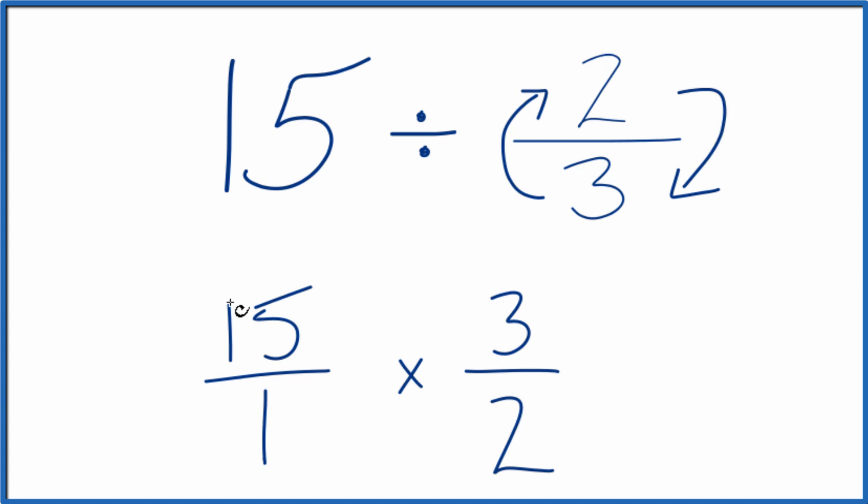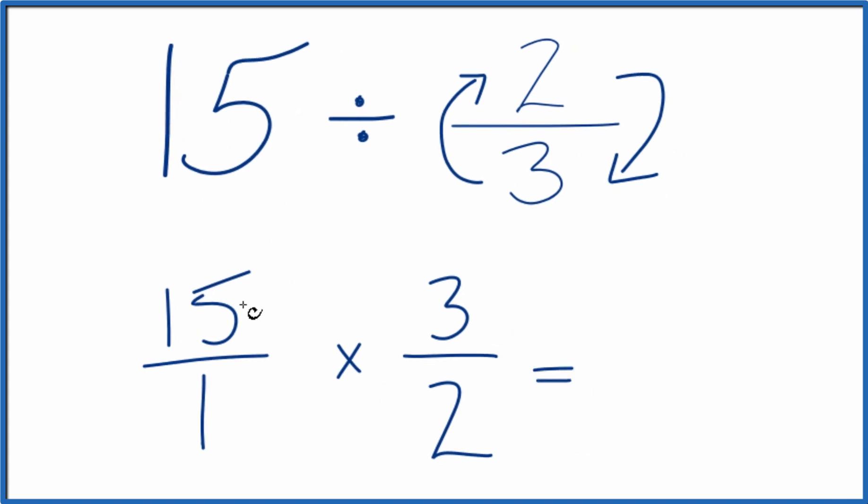So now we can multiply the fractions here. With fractions, we multiply the numerators and then the denominators. 15 times 3, that's 45. 1 times 2, that's 2.